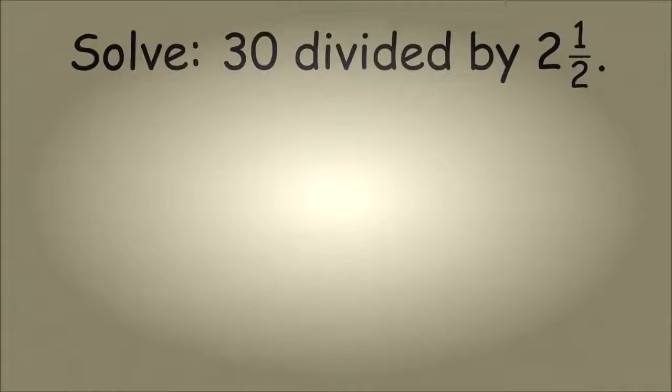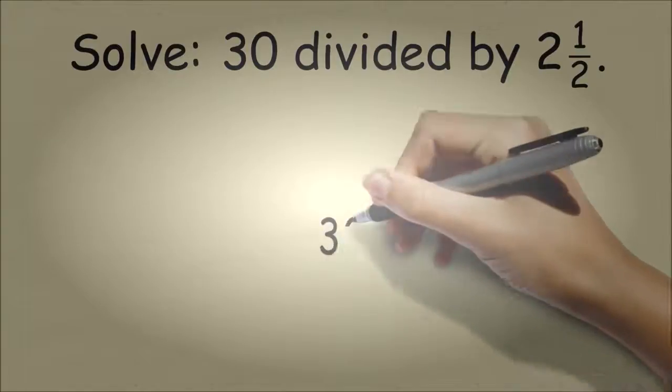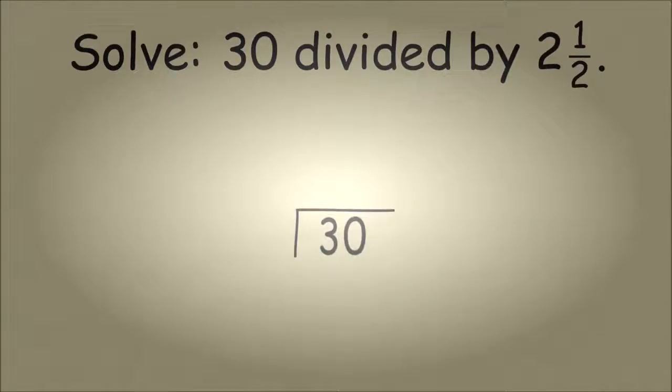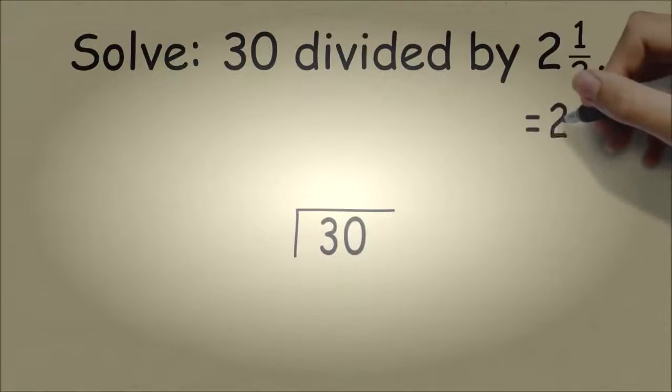Let's do a math problem. What is 30 divided by 2 and a half? In school we would do this problem by long division. We would set up 30 as the dividend. The number 2 and a half, which is our divisor, becomes 2.5.